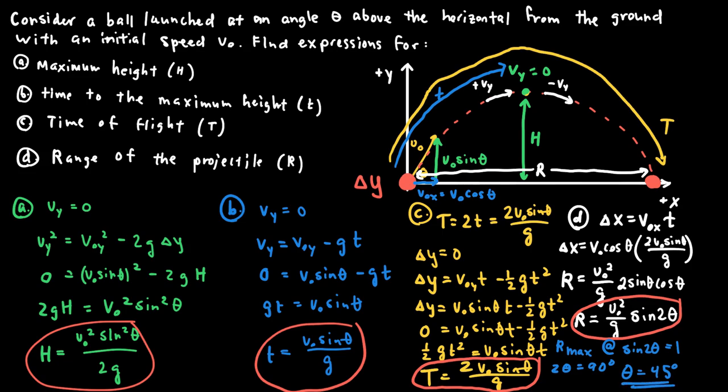This tells us that if you want a projectile to go as far as possible, you should launch it at 45 degrees — assuming no air resistance. If launched at a slightly different angle, like 47° or 43°, the sine term would be less than 1 and the projectile would not travel as far.